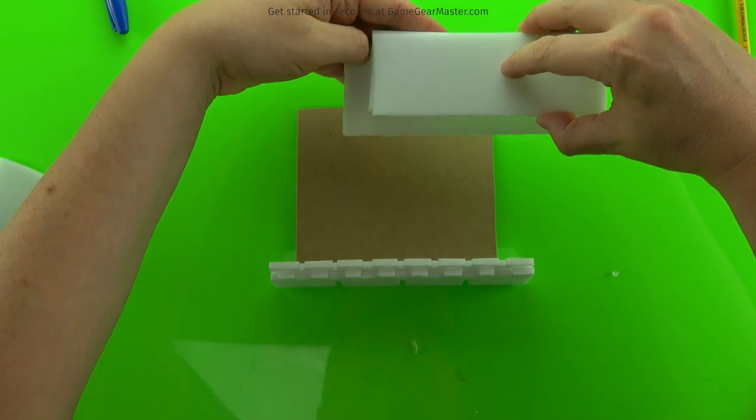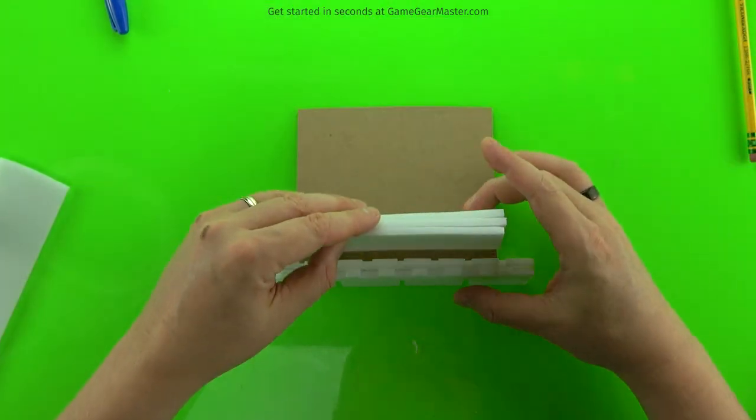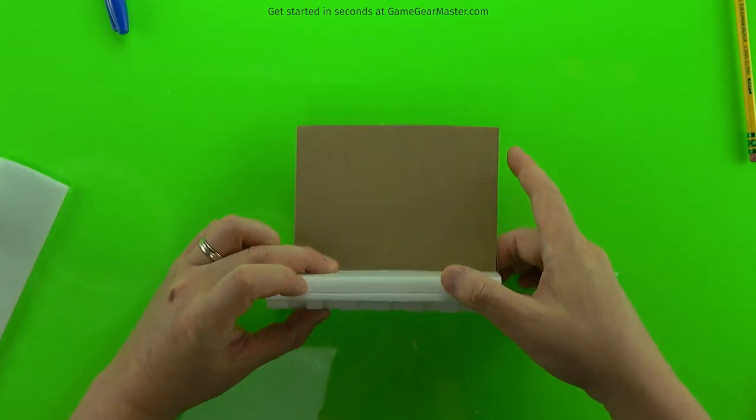And then we're going to put that entire bundle onto the cardboard with those two spacers right up against the back of the crenellation. Just like that.